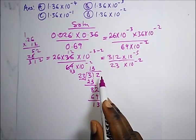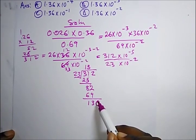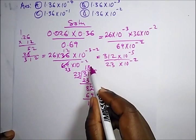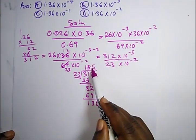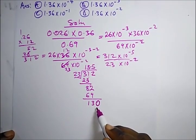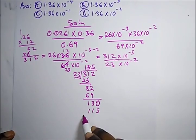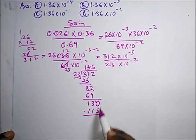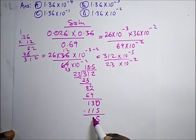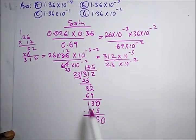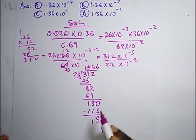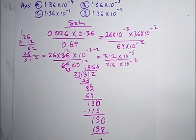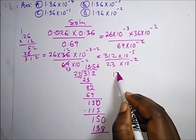We're left with 13. Drop down a zero and place a decimal point. 23 into 130 goes five times. Five times 23 is 115. Subtracting, we get 15. Drop a zero: 23 into 150 goes six times, giving 138. So we get approximately 13.56.